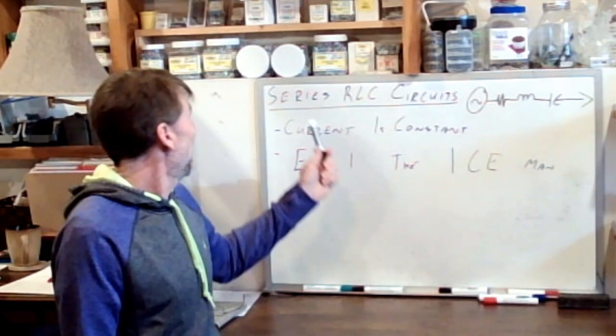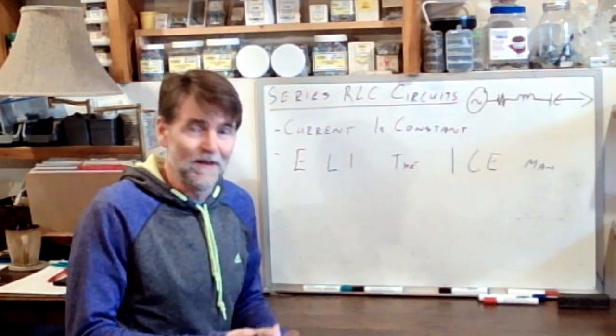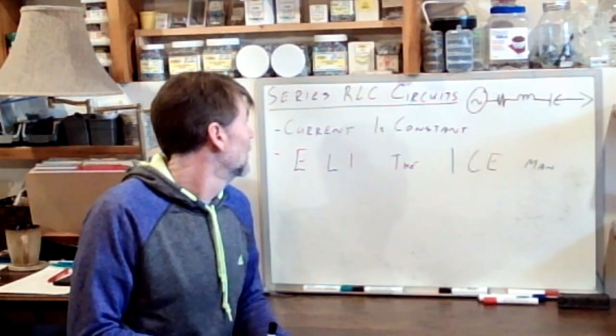Okay, so the next step in the progression is to now look at a series RLC circuit, which means we are taking a resistor, an inductor, and a capacitor and placing all three of them together in series.